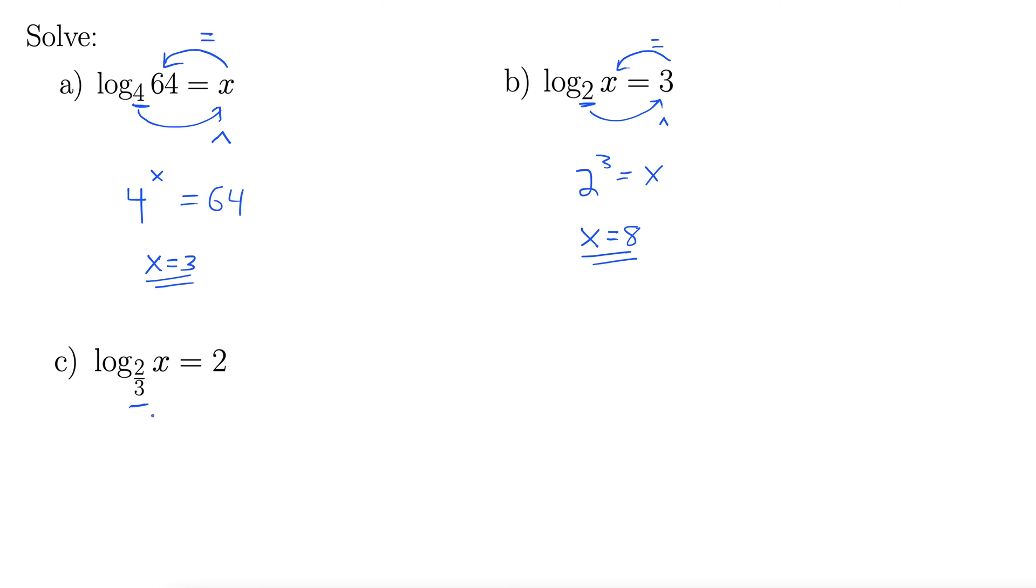We start with the base, 2 thirds. 2 thirds around the outside for our exponent, to the power of 2, and I'm putting that in parentheses there, that's important. Back inside for the equals, equals x. So x must be 4 ninths.